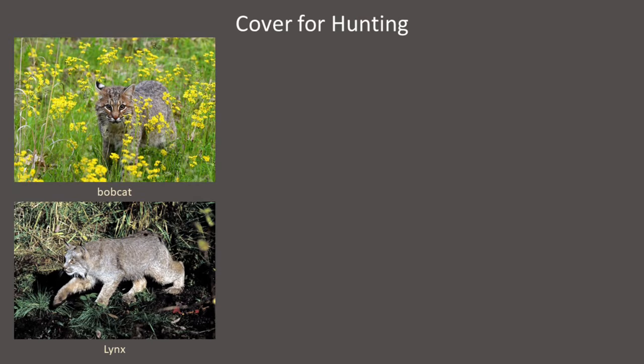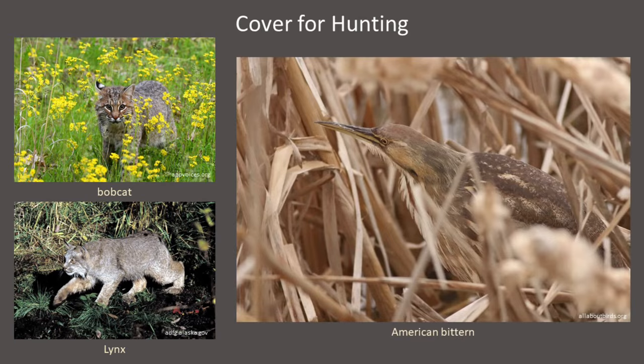Cover is also particularly important for predators that rely on ambushing or stalking prey as their primary hunting strategy. Perhaps the best example is shown in the posture and plumage of the American bittern, which hunts fish, amphibians, snakes, and small mammals in shallow water along the edges of tall dense cattails.